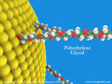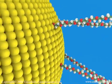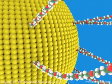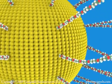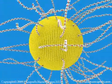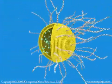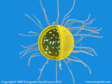Liposomes can have various molecules attached to their surface. The most common surface modification is PEGylation, in which the polymer polyethylene glycol is covalently linked to the surface of the liposomes. Small PEGylated liposomes circulate in the bloodstream longer than plain liposomes.